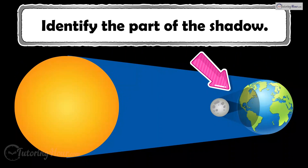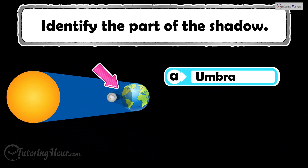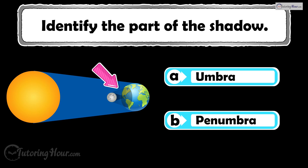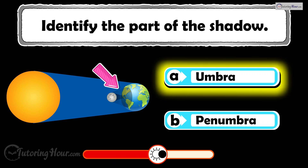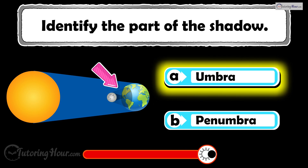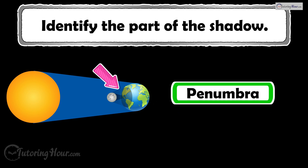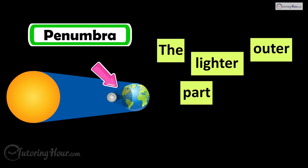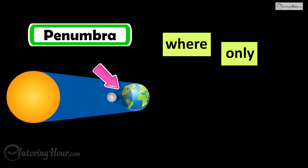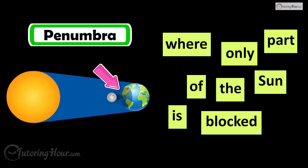Identify the part of the shadow. Is it A, umbra, or B, penumbra? The correct answer is penumbra, the lighter outer part of the shadow where only part of the sun is blocked.